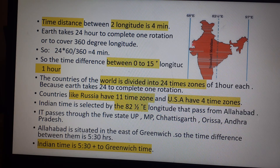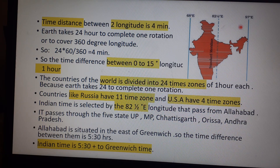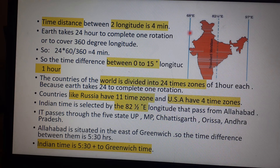To the east of the Prime Meridian, time increases (plus), and to the west of the Prime Meridian, time decreases (minus). So remember: in the west time always decreases and in the east time always increases.